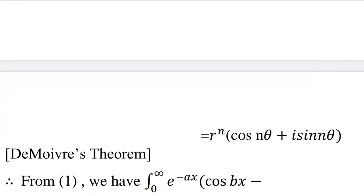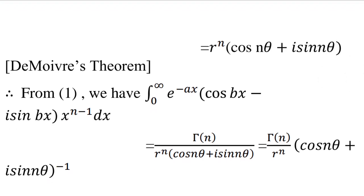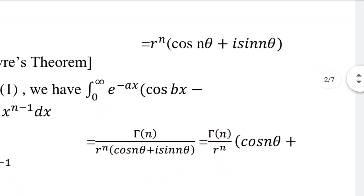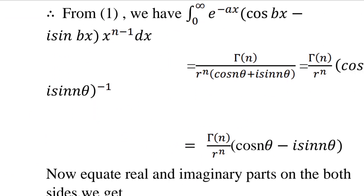This simplifies to r raised to n into cos n theta plus i sin n theta. From equation 1, the integral from 0 to infinity of e raised to minus ax into cos bx minus i sin bx into x raised to n minus 1 dx equals gamma n by r raised to n into cos n theta plus i sin n theta raised to minus 1, which equals gamma n by r raised to n into cos n theta minus i sin n theta.